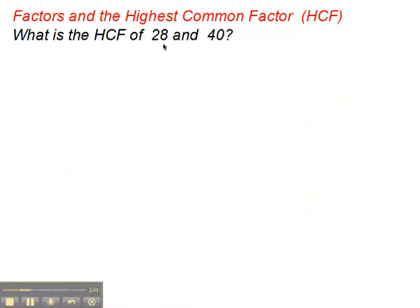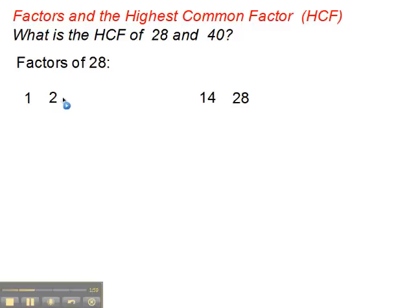Now let's look at the idea of highest common factor. What is the highest common factor of 28 and 40? First of all, we write down all the factors of 28. Certainly 1 and 28 is a factor pair. 2, yes, that divides 14 times. 3 doesn't divide. 4, yes, 7 times — so 4 and 7 are a factor pair. 5, no. 6, no. 7, yes, but we've already covered that. So we've got all the factors of 28.